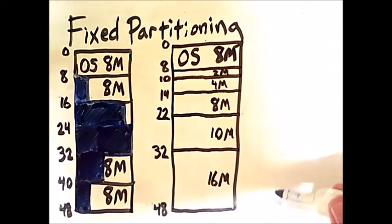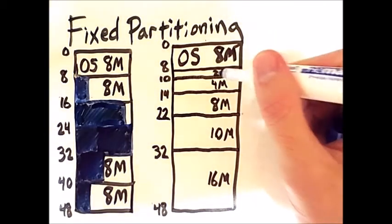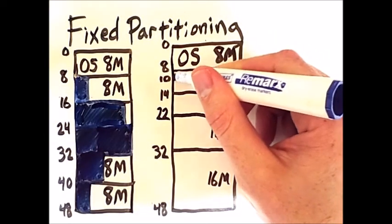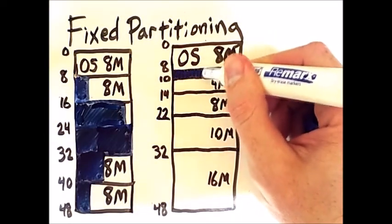If we get a small process, it makes more sense to put it in this very small partition rather than to put it in one of the larger partitions.